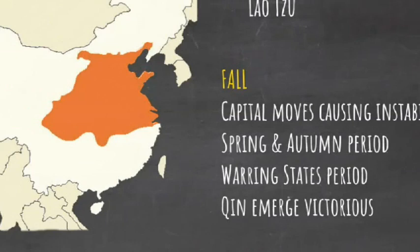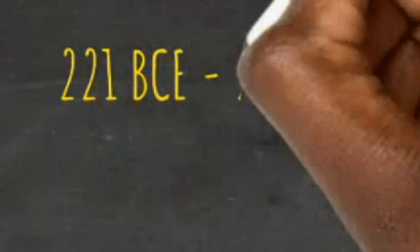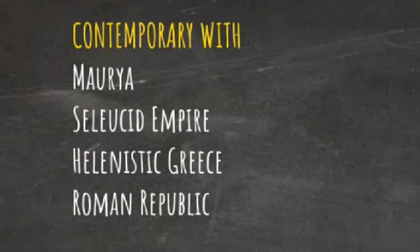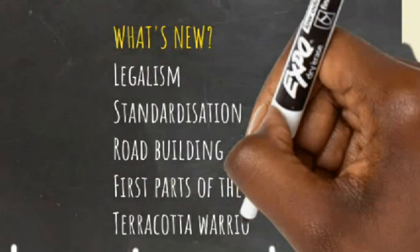The Qin only ruled for 15 years, from 221 to 206 BCE, but their significance was massive. They were contemporary with Maurya in India, the Seleucid Empire, Hellenistic Greece and the Roman Republic. It was a period of further expansion and major works such as the start of the Great Wall and road building. A century before they rose to power, the Qin statesman Shang Yang had instigated the rule of law to ensure that all received justice, and standardized weights and measures. Though he came to a very unpleasant end — pulled apart by five horses — the blueprint for Qin rule was laid, and legalism and standardization became hallmarks of their rule.